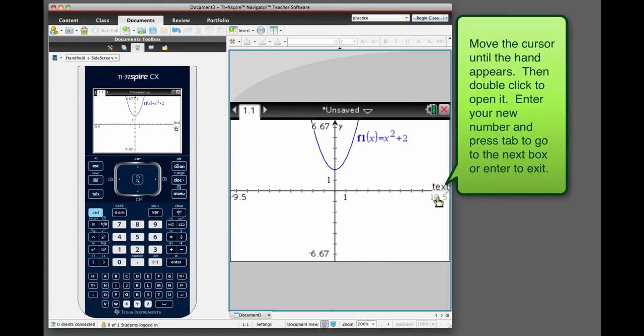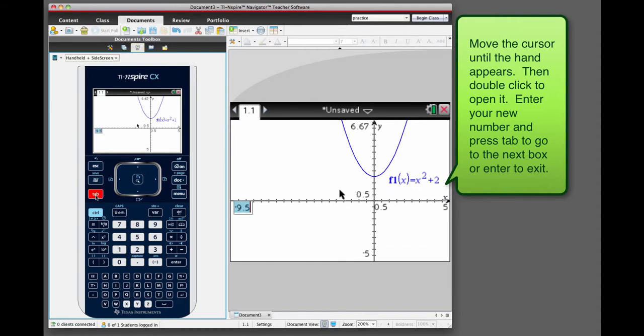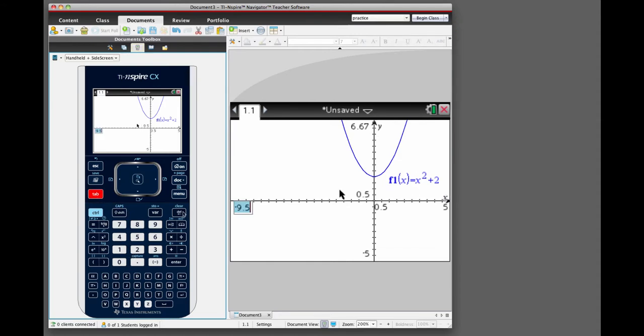Next thing you can do is adjust the domain and range by clicking on one of the boxes and changing in a new number that you like. Clicking on tab moves you to the next one and you can put in the value that you would like for that. And then tab all the way around and you can resize the window to your liking.